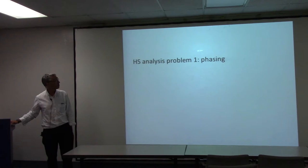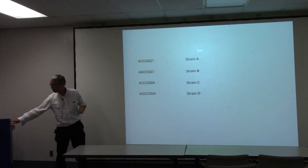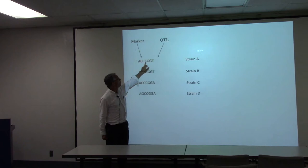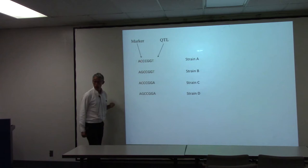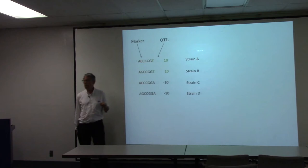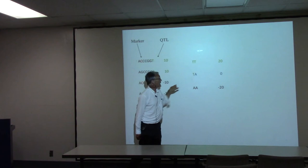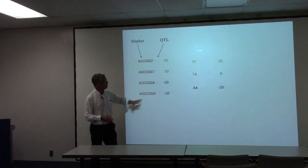The first I'll call a phasing problem. To make this very easy, we'll assume haploid animals and just four strains. Say we have one locus contributing to the phenotype — the QTL — and over here we have the marker. The QTL is information we don't have; the marker is information we can acquire from genotyping. We can assign an effect: the T allele increases the phenotype by 10, the A allele decreases it by 10. If we were lucky enough to genotype that exact marker, two T's give 10, T plus A gives 0, and two A's give minus 20. Very simple.